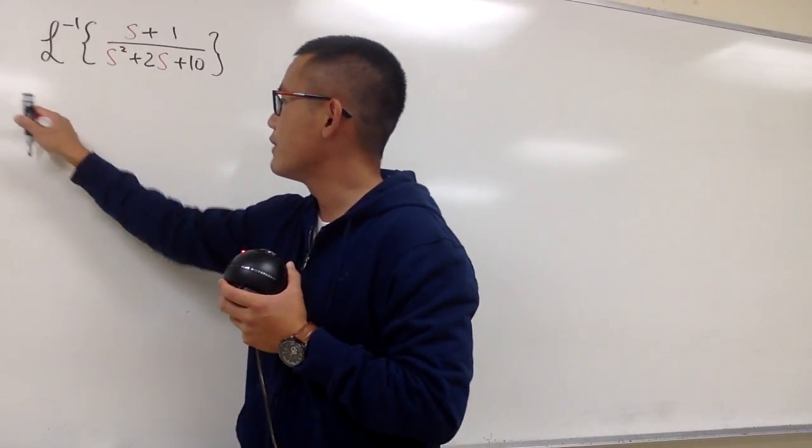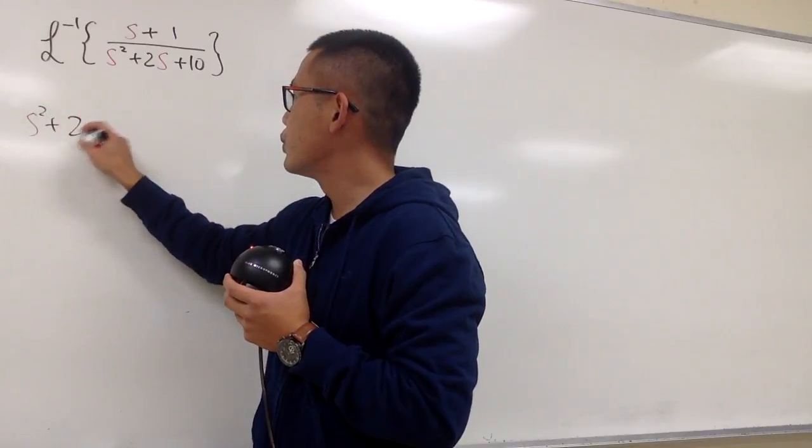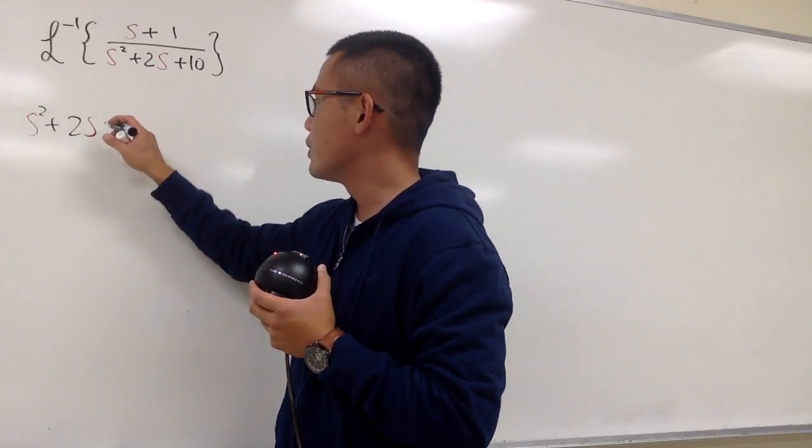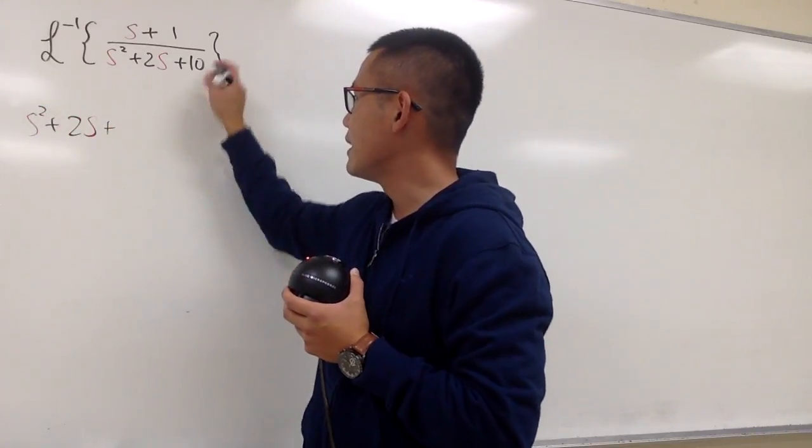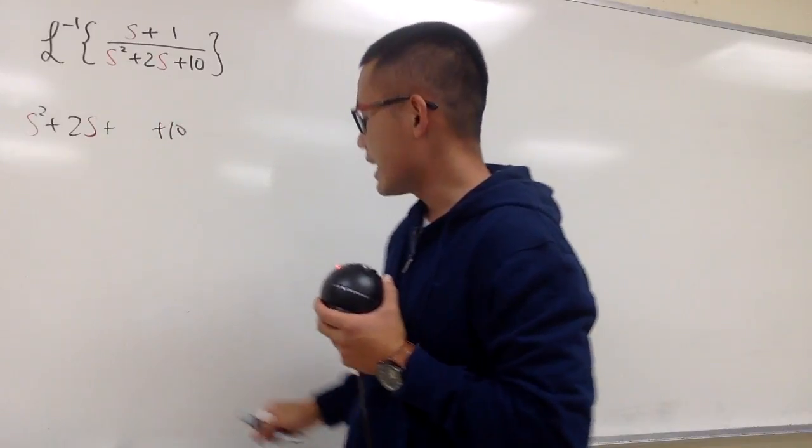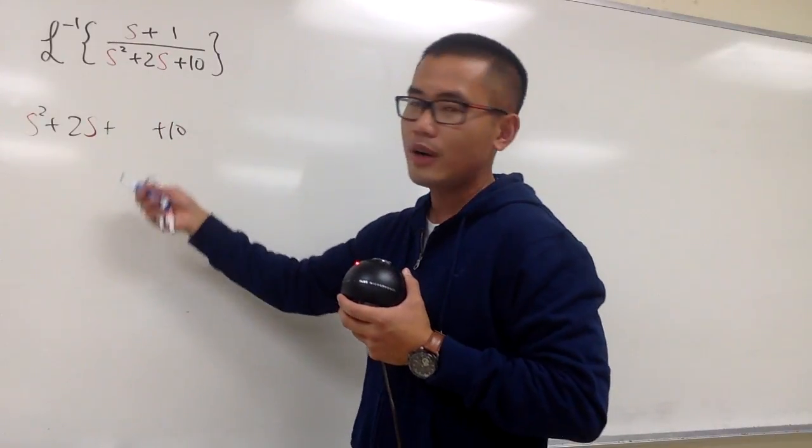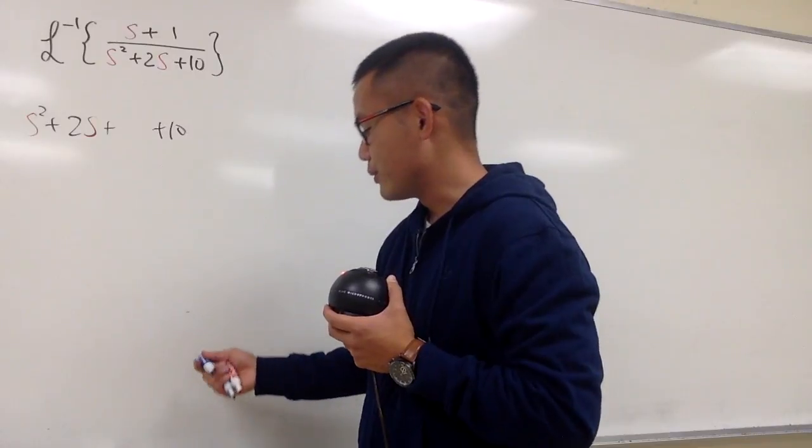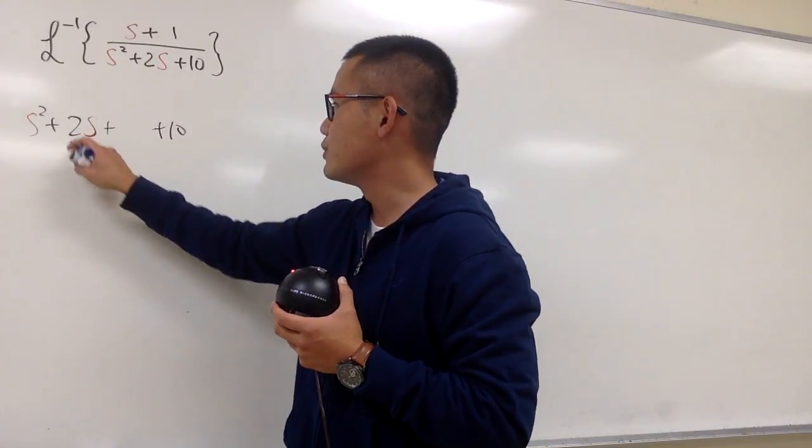So let me put this down right here. We have s squared plus 2 times s, and let me just leave a space plus something, and then here we have the plus 10 after that. Well, how do I figure out what this is? You have to just look at whatever this is, which is 2.